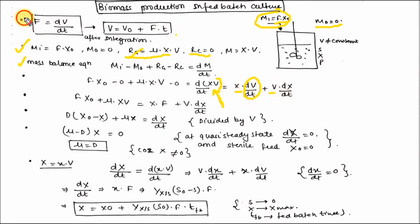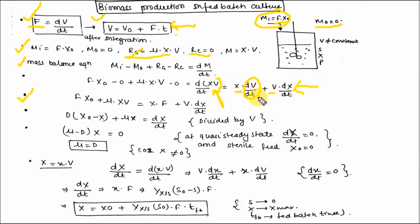dV/dt is also known as flow rate — the change in volume with respect to time. Integrating this equation gives V = V₀ + Ft. Please remember this formula. Substituting the flow rate and dividing the whole equation by volume V, the flow rate term converts into dilution rate D, where dilution rate equals flow rate divided by volume.